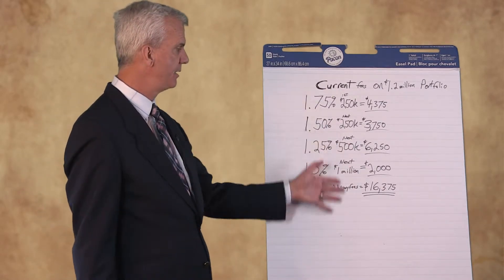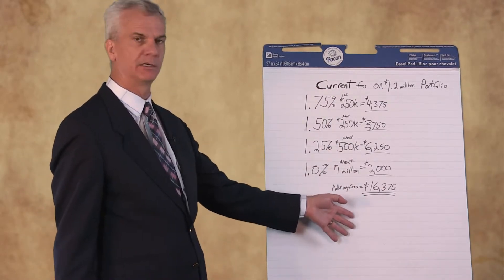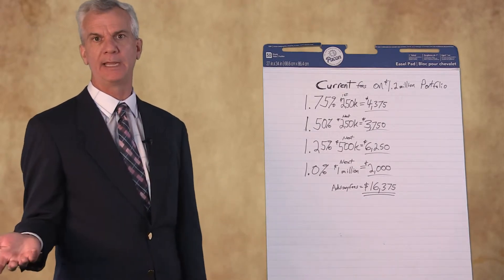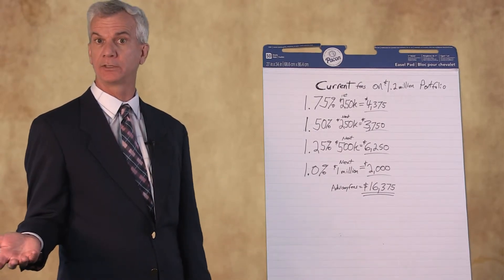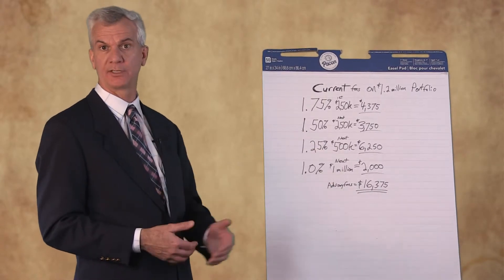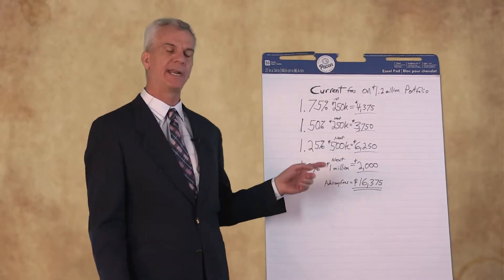So on $1.2 million, if they were paying 75 basis points, then that would be $9,000 instead of $16,000. So I point that out.